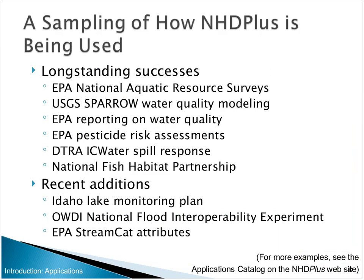The last thing I want to cover is a few applications. First, EPA sponsors and manages — in collaboration with states and other federal organizations — what we call the National Aquatic Resource Surveys. These are national surveys focusing on five water body types: streams, rivers, wetlands, oceans, and lakes, on a five-year rolling cycle. It's a statistically based survey where possible sampling locations are streams and lakes in the NHD, and a subset is randomly selected. Reports are available on the EPA website.